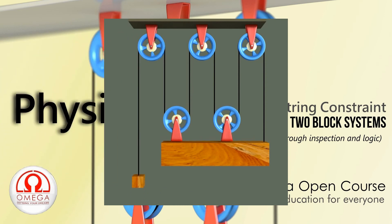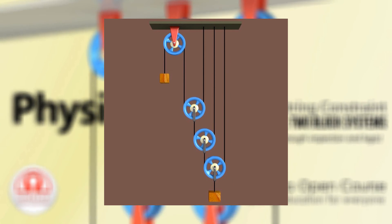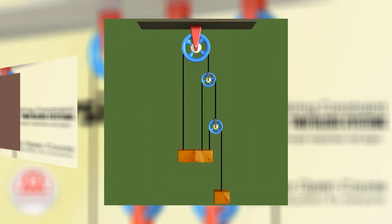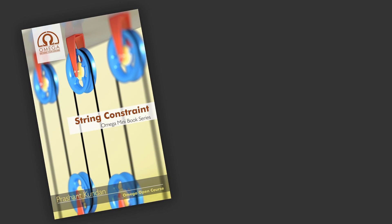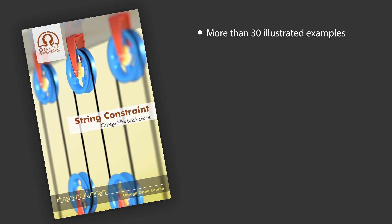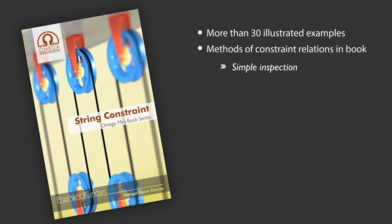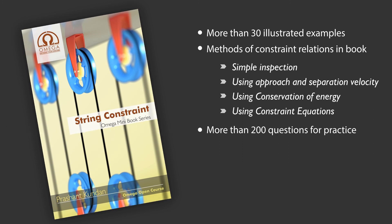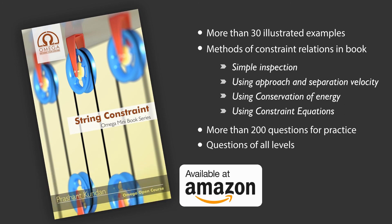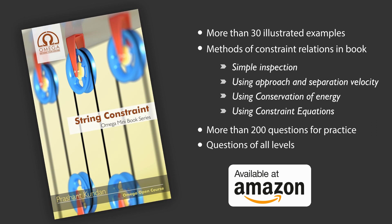String constraint cannot be learned properly unless you solve a large number of questions on it. Unfortunately, in the books available in the market, the questions on string constraint or motion constraint are scarce and scattered. To resolve this problem, we have prepared a mini-book which focuses entirely on string constraint and motion constraint. This book explains string constraint using several illustrated examples, and also explains different methods used to write constraint relations — like by inspection, through the concept of approach and separation velocity, using conservation of energy, and by writing constraint equations. It consists of about 200 questions ranging from very preliminary to pretty advanced ones, along with hints and solutions. No matter what stage of preparation you are at, this book is very helpful. You can buy it from Amazon; the links are given in the description below.